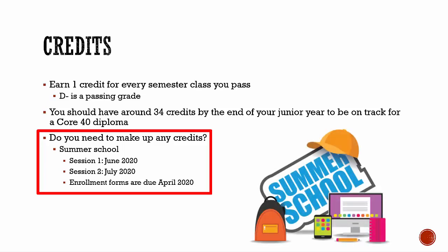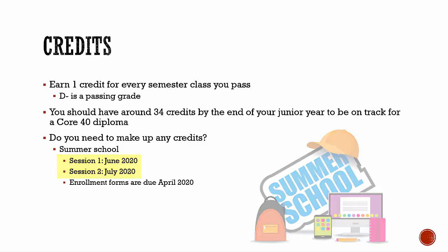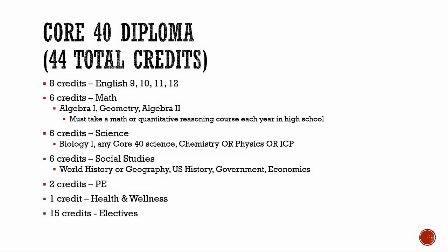Summer school runs in two sessions, one in June and one in July. Summer school registration forms will be due sometime in April of 2020. To graduate with a diploma, there are some requirements that you need to keep in mind as you're selecting classes.